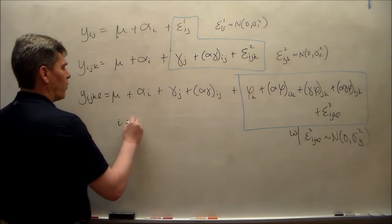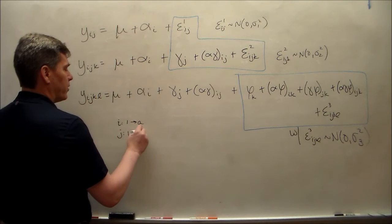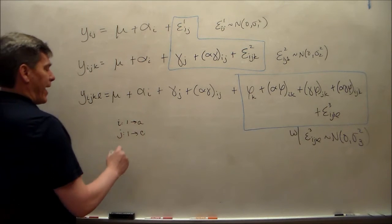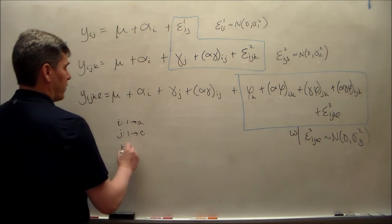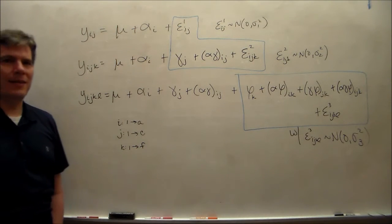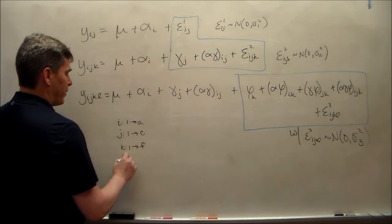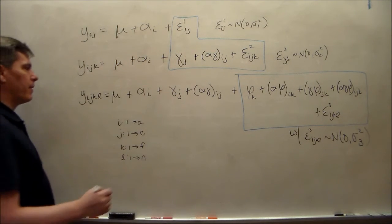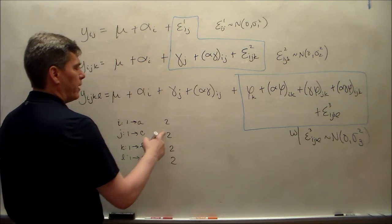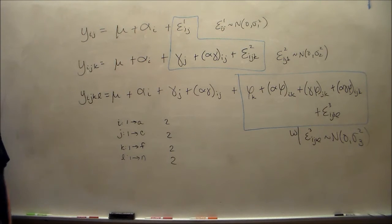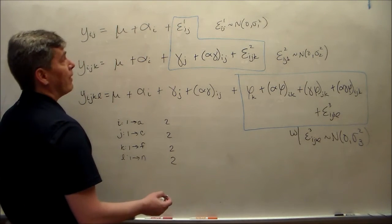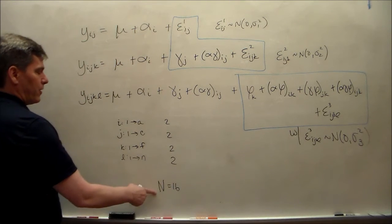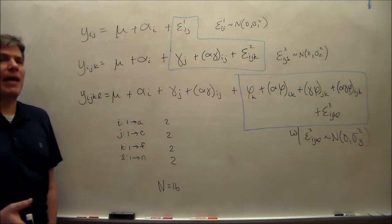As usual, i's run from 1 to a, j's run from 1 to c. Here we're going to have k's, which index the phi variable, run from 1 to f. Why not? F for phi. And then the l is going to be the replication variable, that's going to be 1 to n. For the data that I had on the board, n was 2. a, c, and f are also 2. 2 times 2 times 2 is 8, that's the number of cells. 2 times 2 times 2 times 2 is 16, which is the number of data points. So capital N, that's 16. Note that this capital N indicates the total sample size, the number of flowers that were eventually measured.